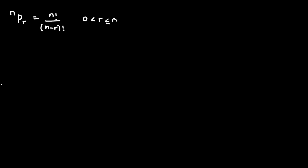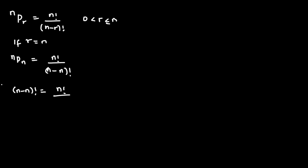Now, if we take the special case whereby r is equal to n, we are going to have n permutation n equal to n factorial over n minus n factorial. And if we cross multiply, we have n minus n factorial equals n factorial all divided by n permutation n, which gives us 0 factorial equals n factorial over n permutation n.